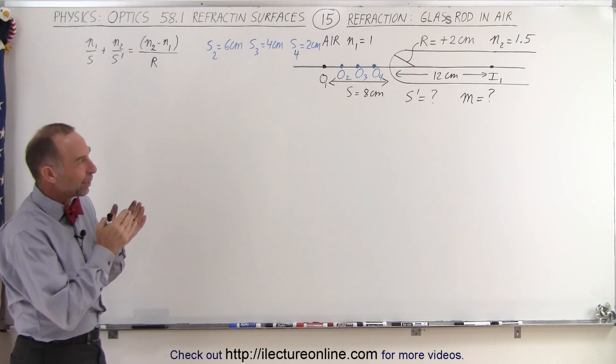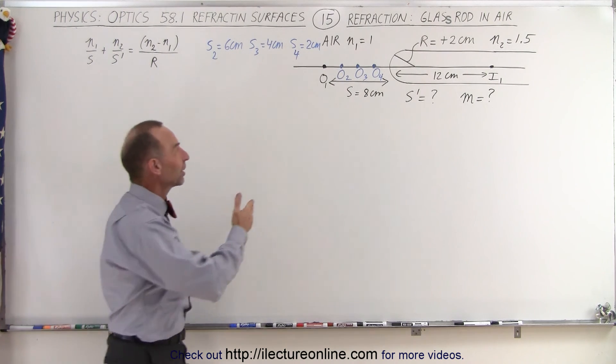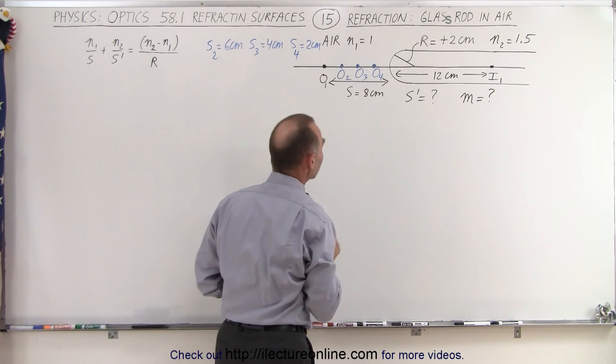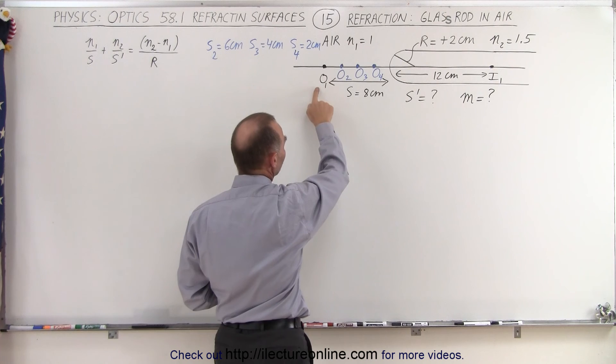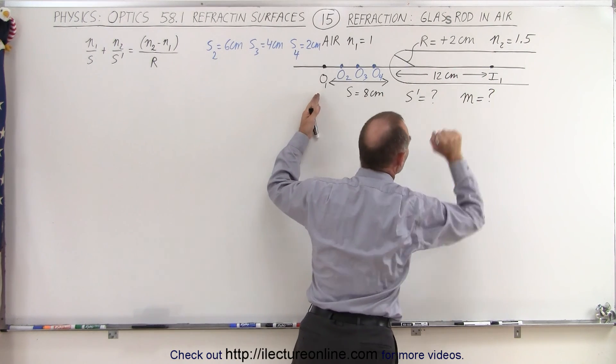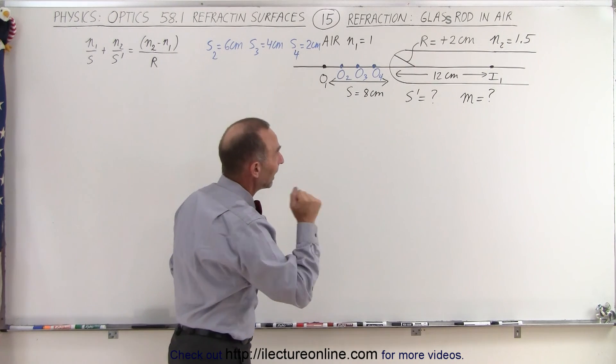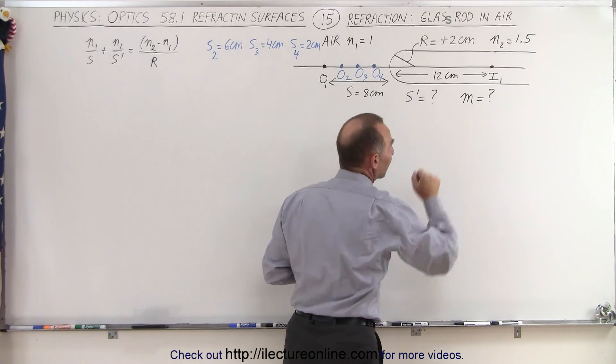Welcome to our lecture online. Here we have the same examples in the previous video, but now we're going to move the object closer and closer to the boundary. Notice when we place the first object 8 centimeters away from the boundary, we found an image 12 centimeters behind it. So what's going to happen as we move the object closer, and in each case, let's also try to find the magnification.